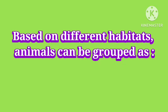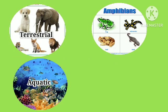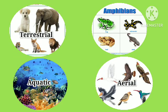Adaptations to Different Habitats: Based on different habitats, animals can be grouped as terrestrial, aquatic, amphibian and aerial.